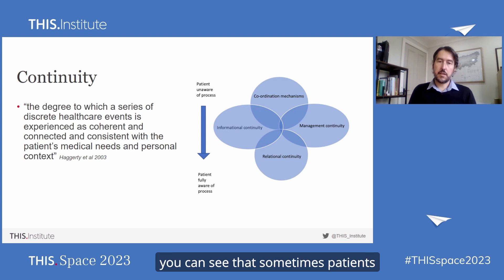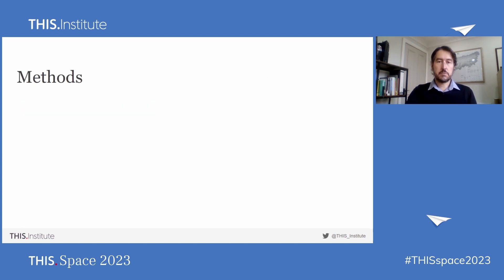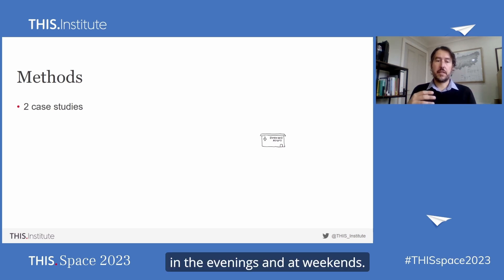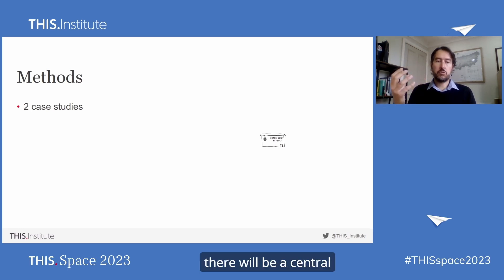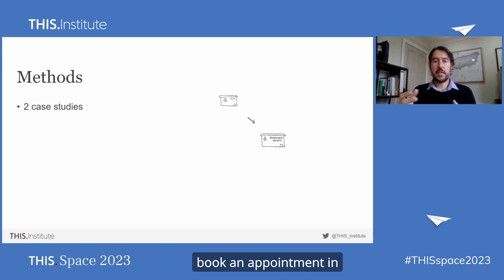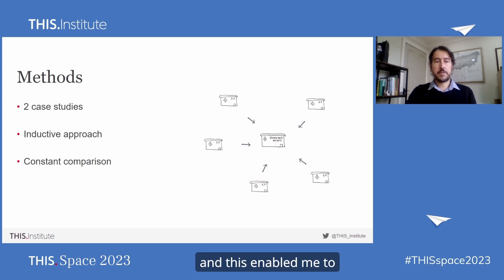Down the side of this figure, you can see that sometimes patients are aware of these elements — a patient knows if they've got a relationship with a clinician, but they may not be aware of some of the coordination mechanisms that go on in the background. So what did I do? I did two case studies of extended access providers. For those of you that don't know what extended access is, it's a service available since 2018 to all GP patients in England, offering routine appointments in the evenings and weekends. Usually a central provider takes appointments — a patient rings their GP, books an appointment, and the GP surgery books them in at this centralised provider, with multiple different practices booking in at the same provider. I used an inductive approach with constant comparison analysis, which enabled me to create a model of the factors that affect the potential for patients to experience seamless care.